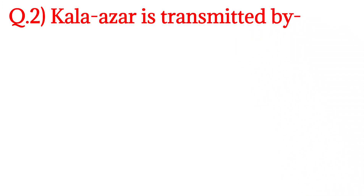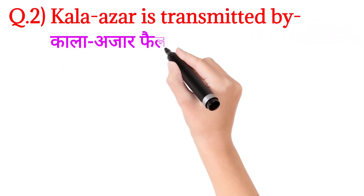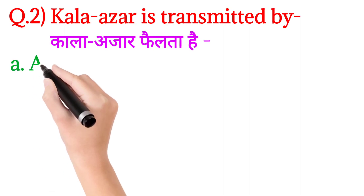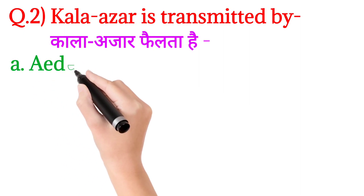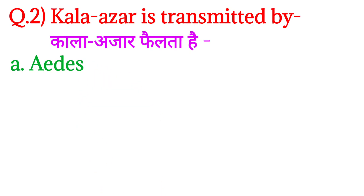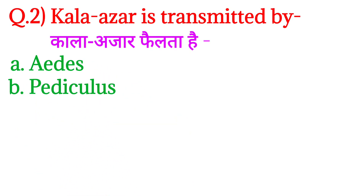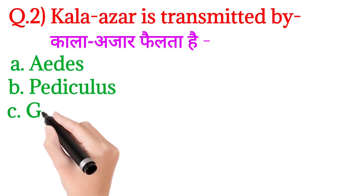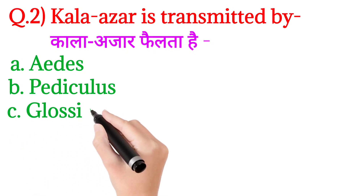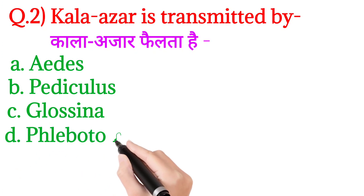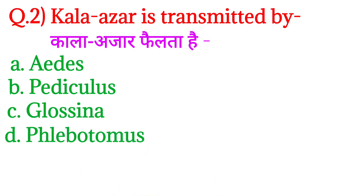Next, question number two: Kala azar is transmitted by — kala azar failta hai kiske dwara transmit hota hai kala azar? Option A: Aedes, Option B: Pediculus, Option C: Glossina, and Option D: Phlebotomus.